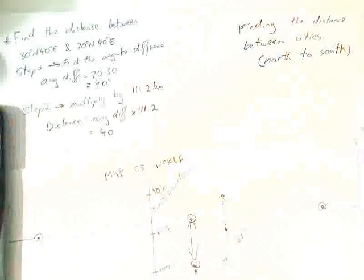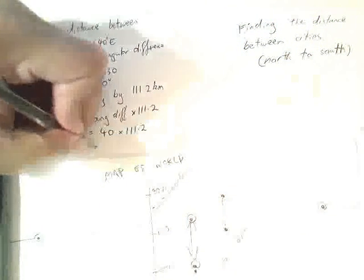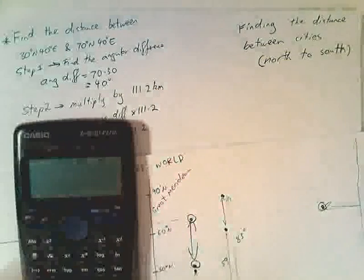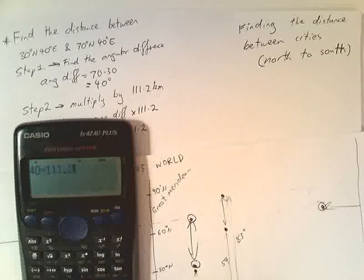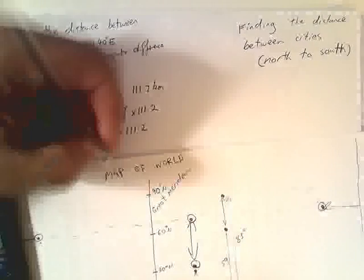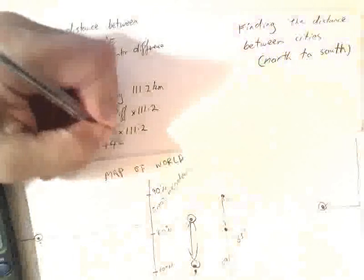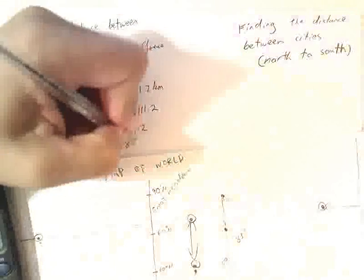Now the angular difference in this case is 40. We're multiplying it by 111.2. Type that into my calculator: 40 times 111.2, I get 4,448 and that distance is in kilometers.